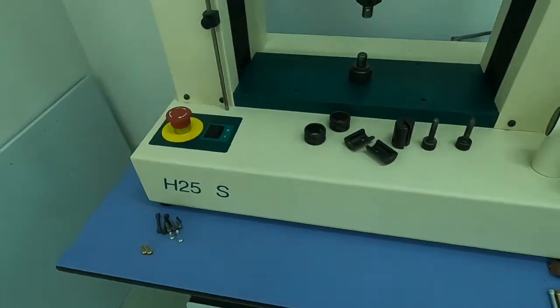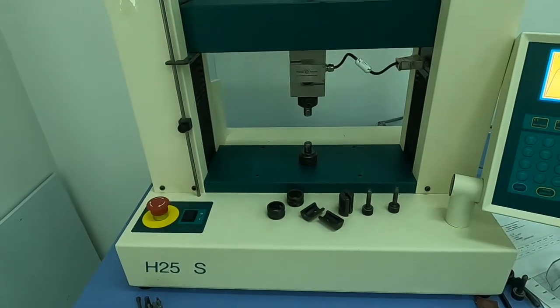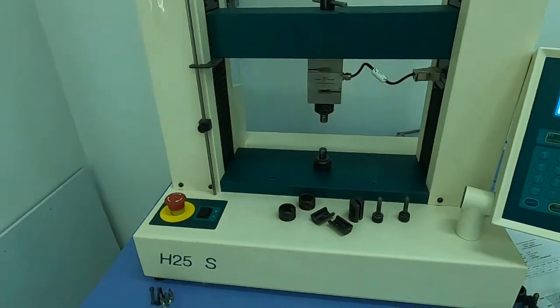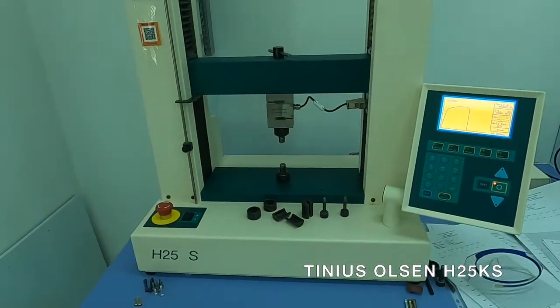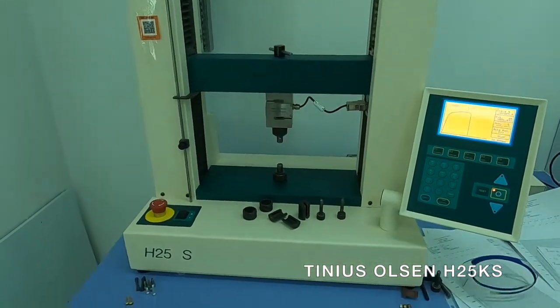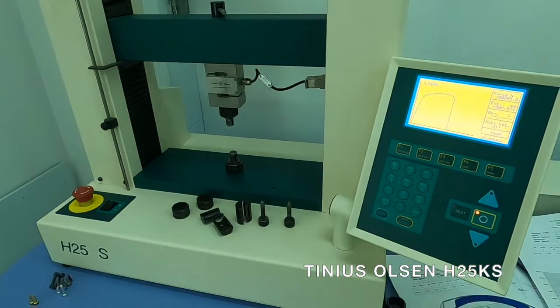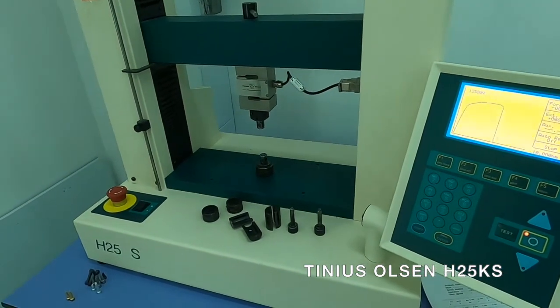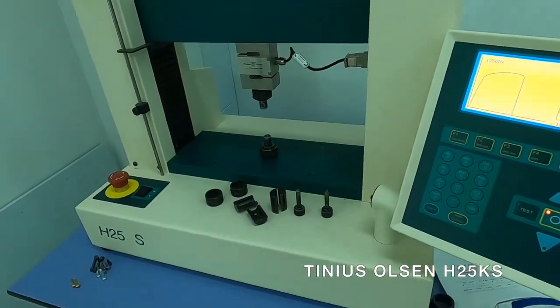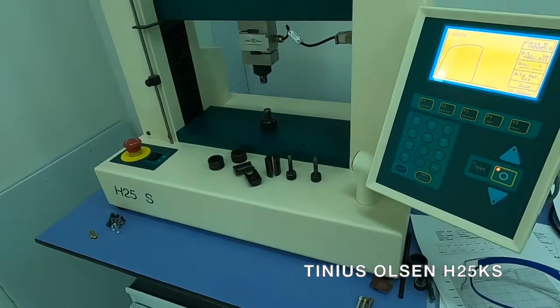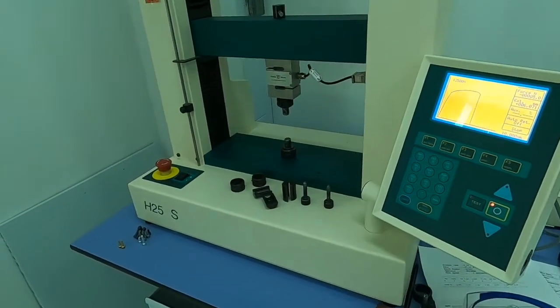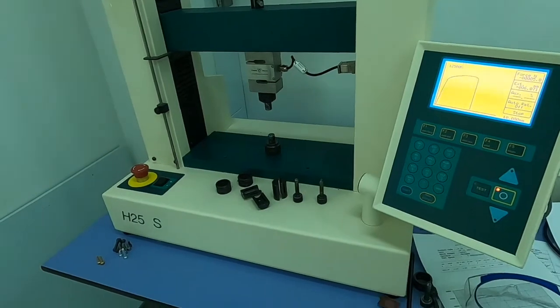Let me introduce the equipment. The capacity of this machine is 25 kilonewtons and this machine is used to determine the tension, compression, shear, and other mechanical and physical properties of the material.